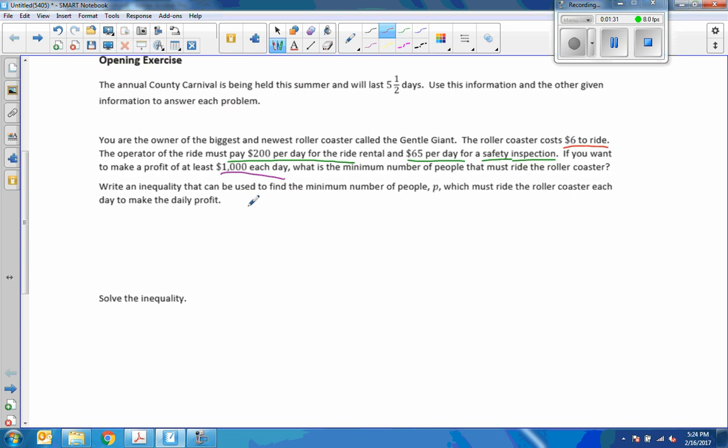So we need to write an inequality that can be used to find the minimum number of people. So I know that some number of people and we know it's $6 to ride. So if one person rides it, it's $6 and two people rides it six times two, which is 12, three people ride that six times three, which is 18. So this is our coefficient variable we're going to use to determine how much money we will make for the ride. But after I make that money, I have to pay $200 for the machine rental, and I have to pay $65 for safety inspection every day.